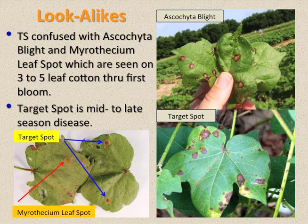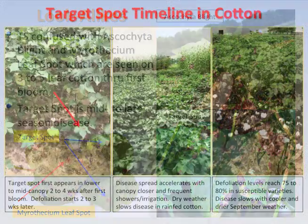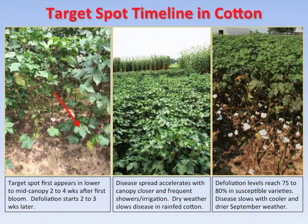Without a hand lens, it is difficult to distinguish between Ascochyta blight, Myrothecium leaf spot, and target spot. As mentioned above, target spot first appears in the lower and mid-leaf canopy two to four weeks after first bloom, and premature leaf loss starts several weeks later. Disease spread and development accelerates with canopy closure in July and August, along with frequent showers and/or irrigation. In dry land cotton, defoliation levels can reach 75% to 80% on susceptible varieties by mid-September.